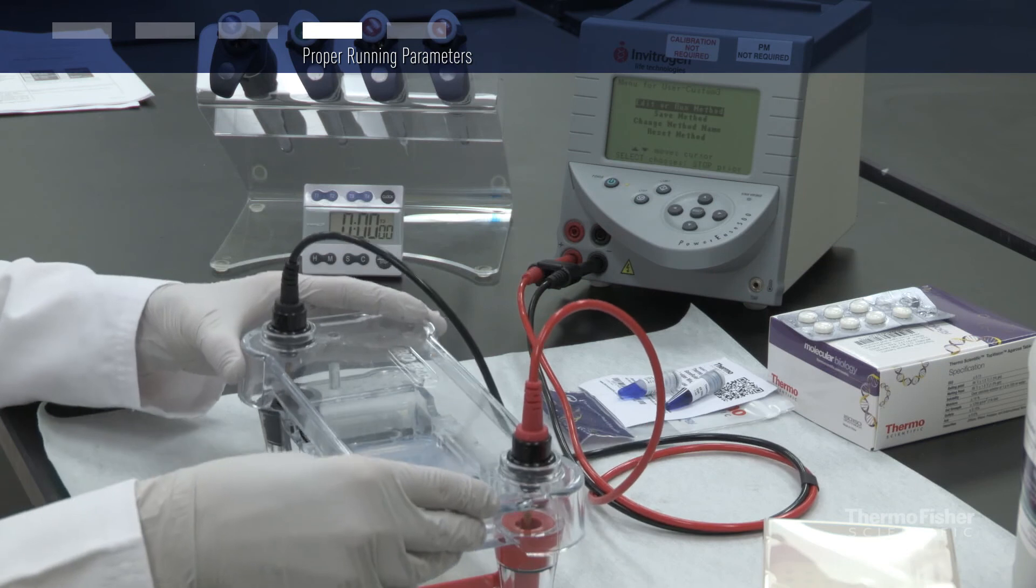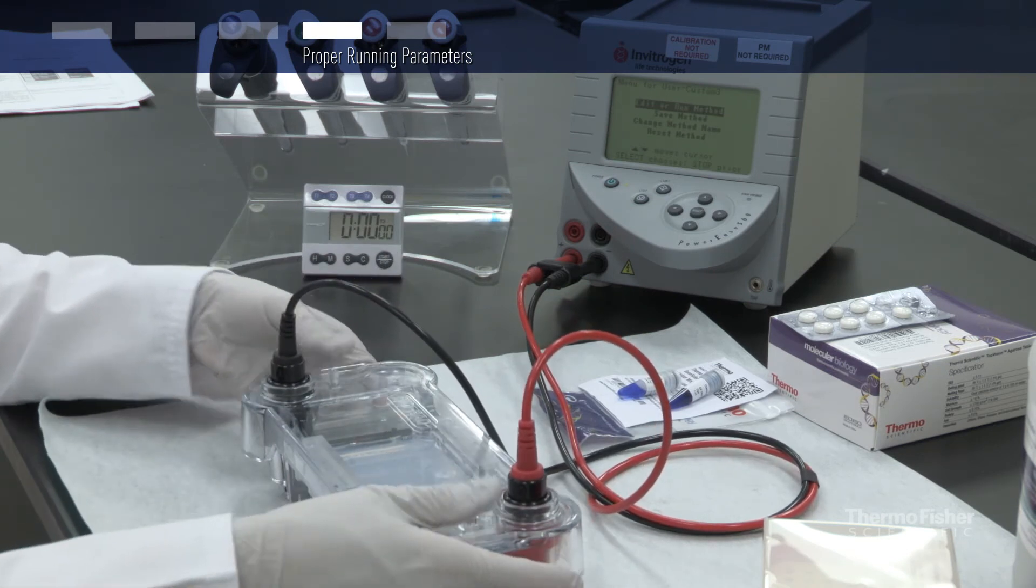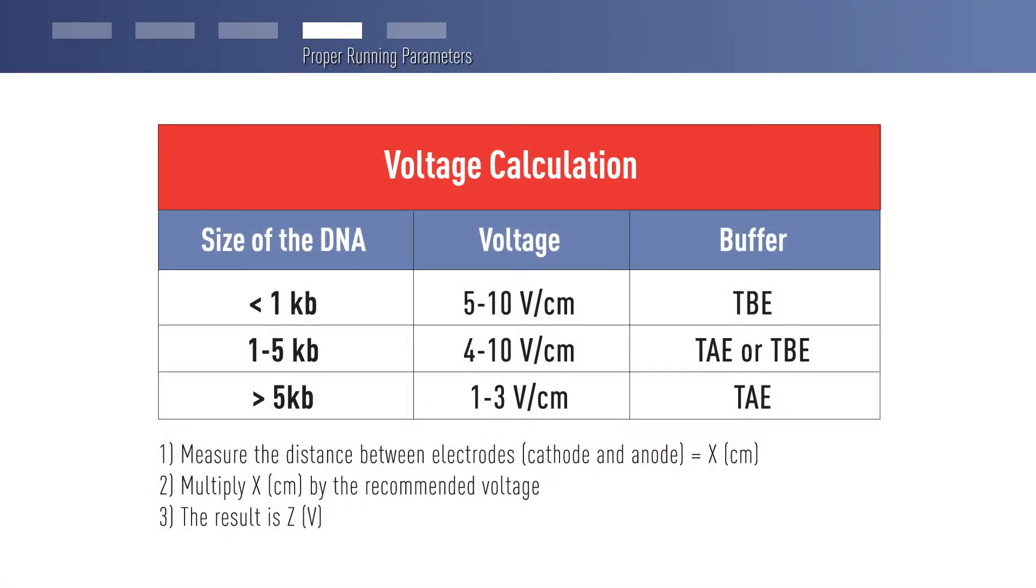For the gel run, it is important to apply appropriate voltage and running time. The voltage depends on the size of the DNA fragment you want to analyze and the size of your gel.